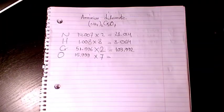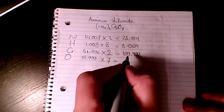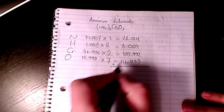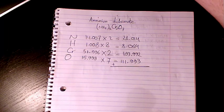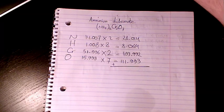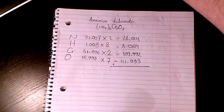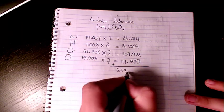seven, that makes it 111.993. And then you add them all: 28.064 plus 28.014, so that makes it 252